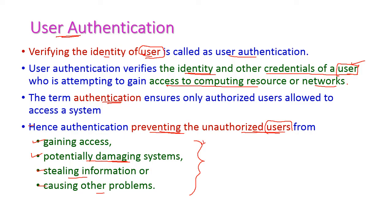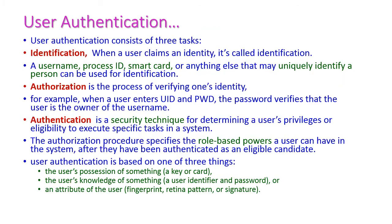To overcome all those problems, we have to authorize a particular person. Only those authorized persons are allowed to access our system. For this, we have to verify whether the person is authorized or not, and for that we use the term user authentication. User authentication consists of three tasks: identification, authorization, and authentication.